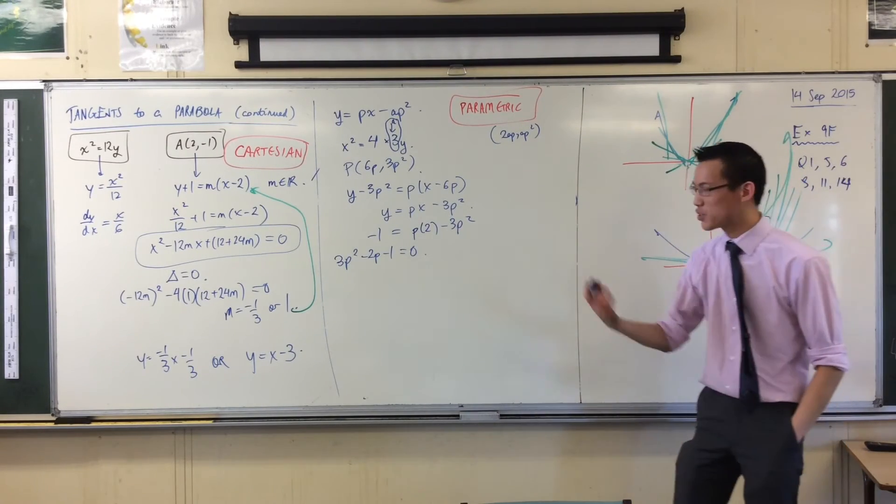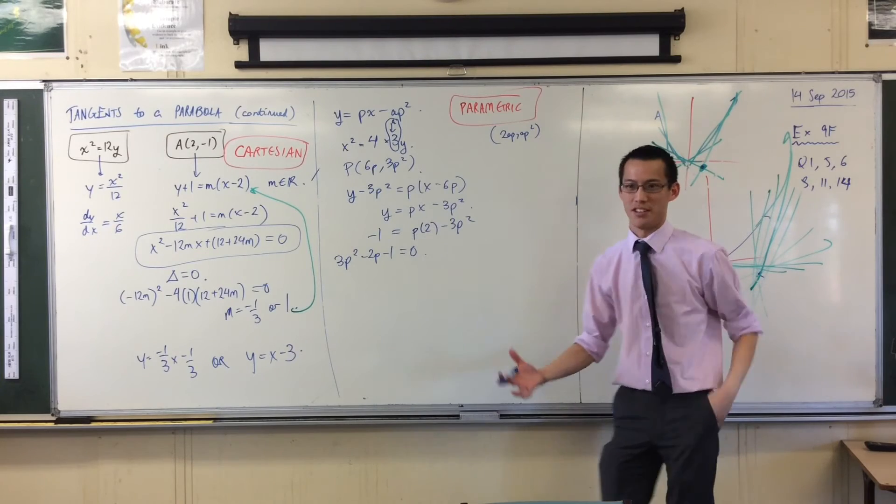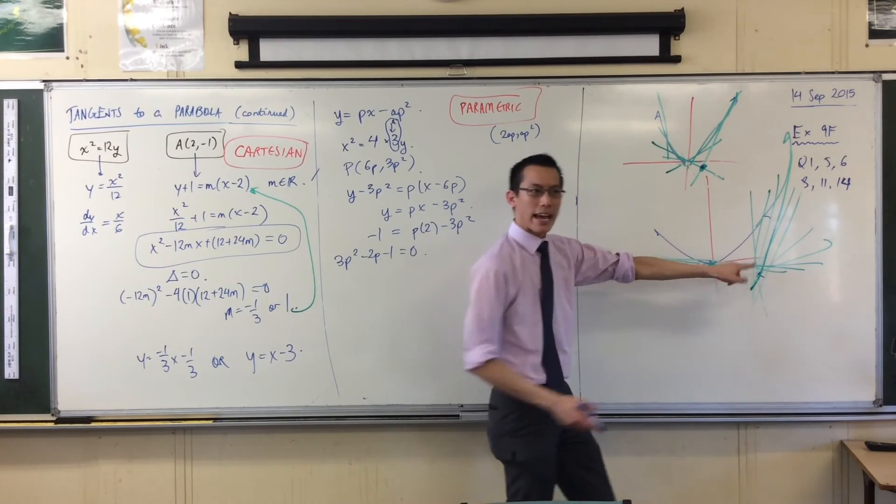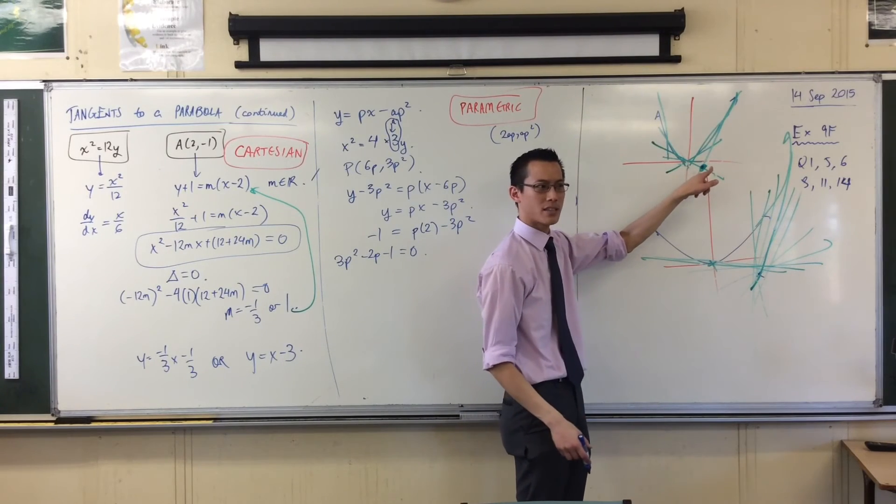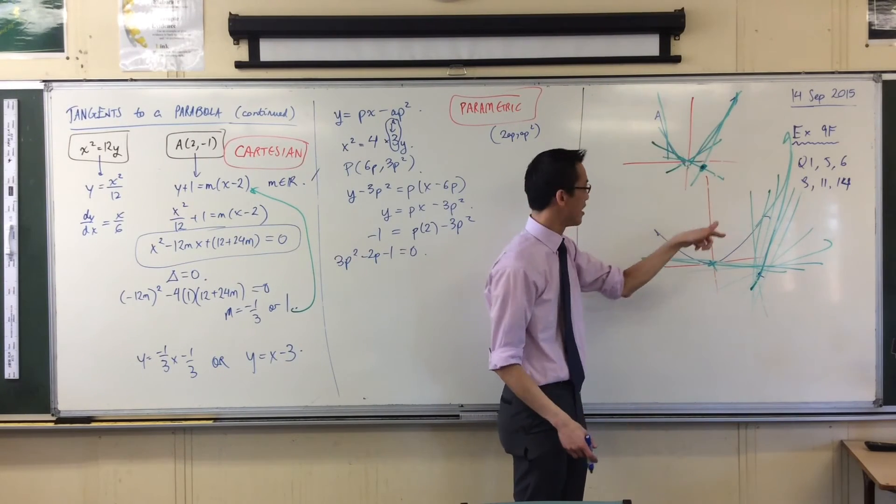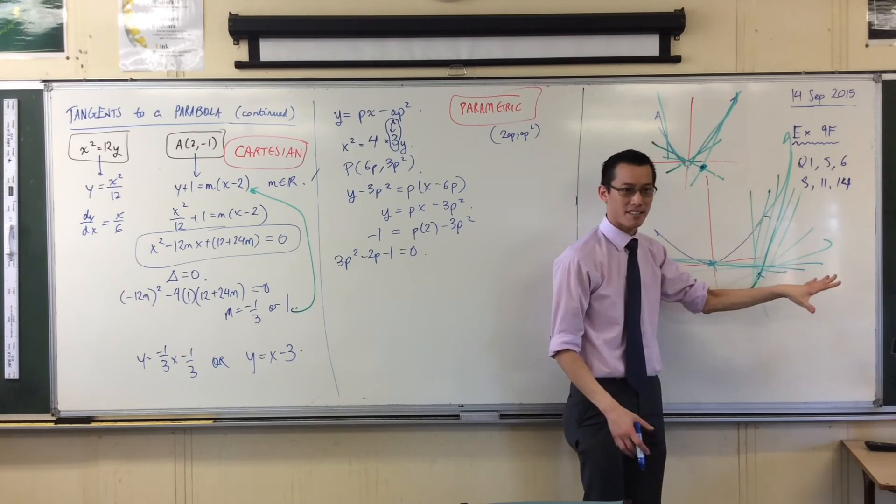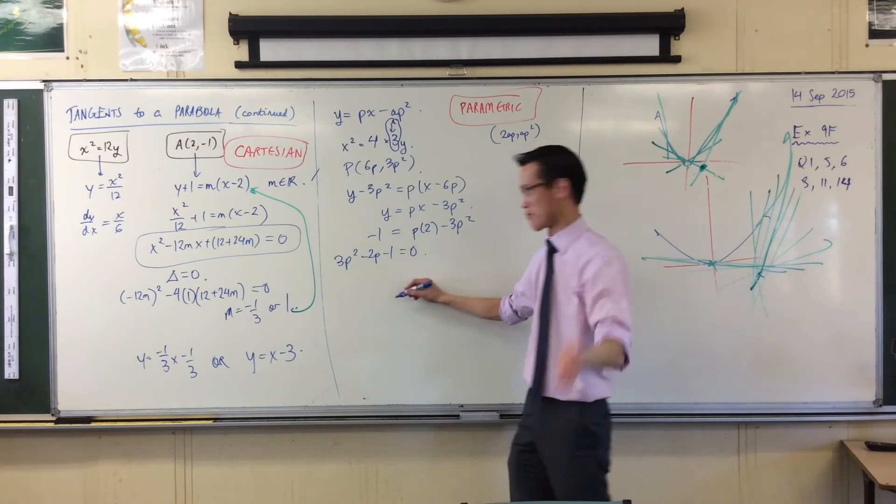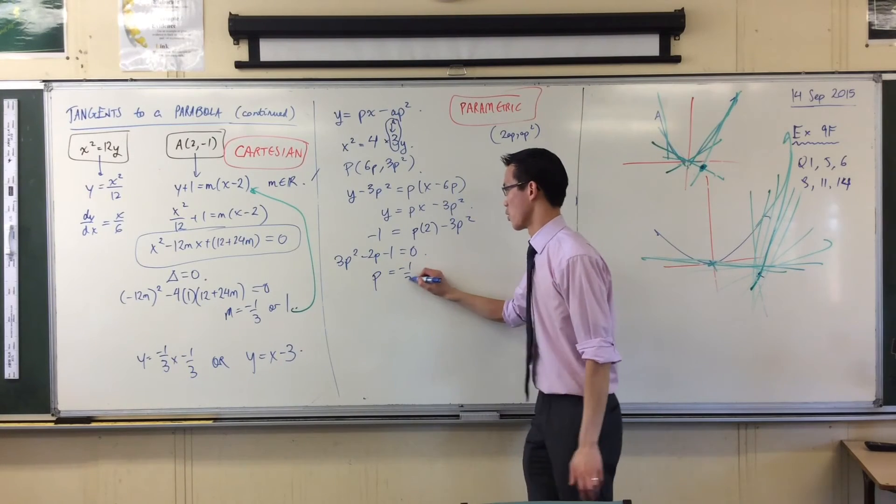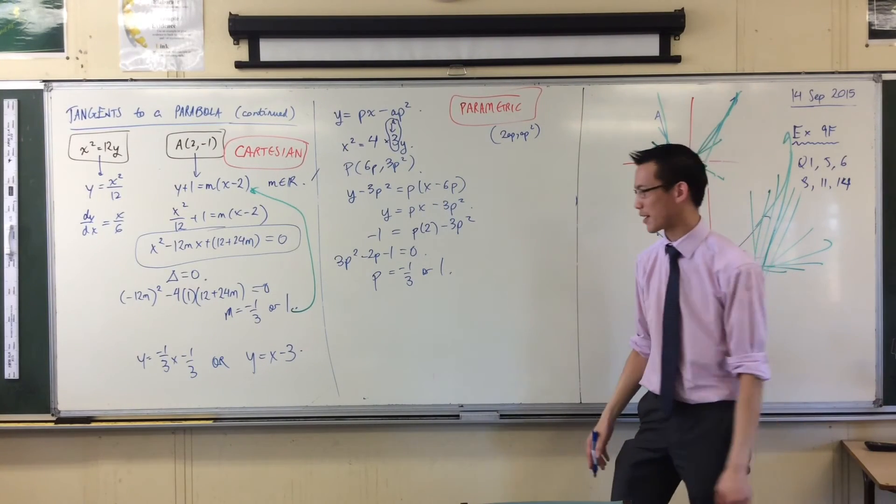We're getting the same quadratic because we're solving the same question from a different angle. Here, it was which gradient do you want? Up here, the question is, which tangent do you want? But the tangent and the gradient, they're going to be the same. So, when you solve this, unsurprisingly, pi is minus 1 over 3 or 1 once you factorized it.